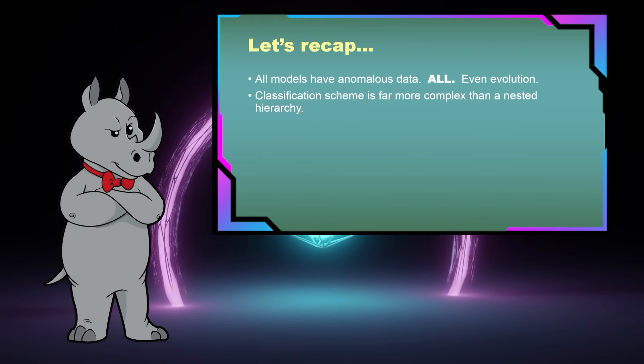The first big one that I pointed out was this notion that the classification scheme is just far more complex than a nested hierarchy. So Darwin basically constructed his evolutionary argument on the idea that the classification scheme looks like a genealogy. And it sort of does if you stand back and squint and don't look at the details. But when you get really up close, you realize, holy cow, this thing is like a bowl of spaghetti.